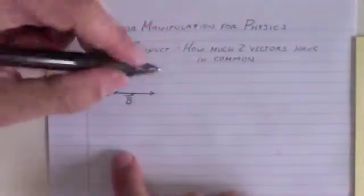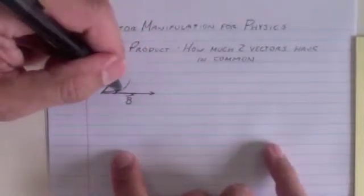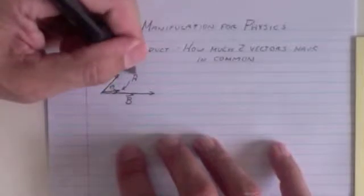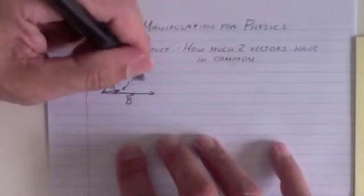And this part that's pointing in the same direction, if there's an angle theta in between them, is A times the cosine of theta.